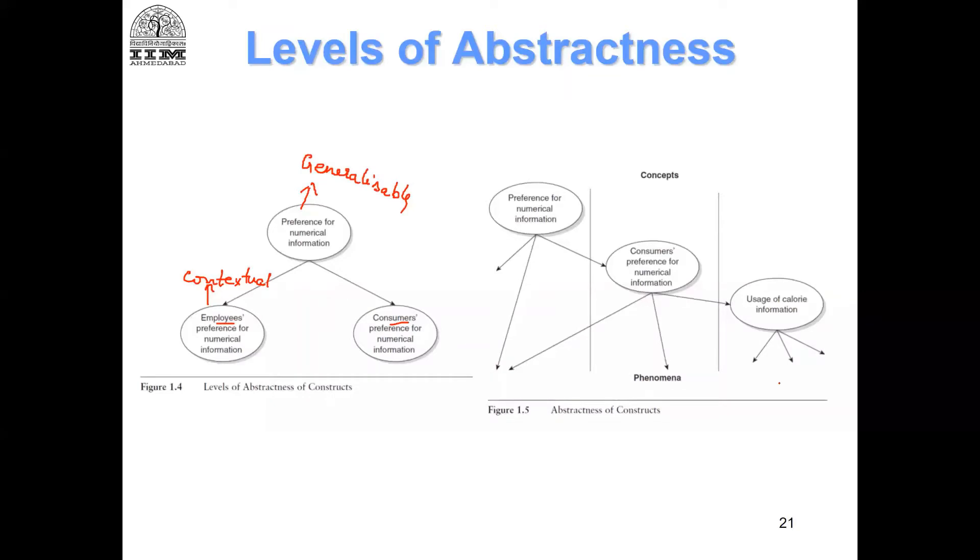This is again something that I was mentioning. You see consumers' preference for numerical information. You can be more specific. You can be more specific. You can say usage of calorie information. Now the usage is going to be even more limited. Here, it is still more and here it is the widest. It is spelling all across.